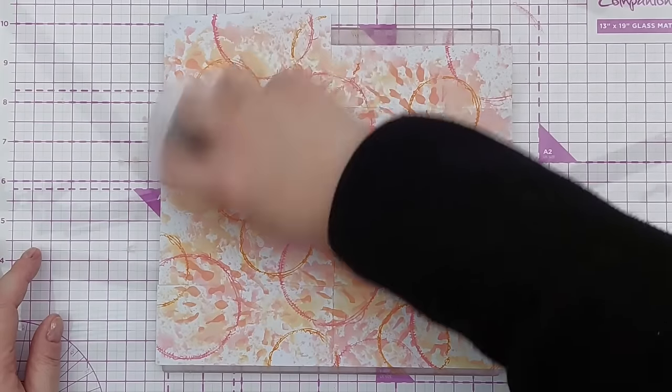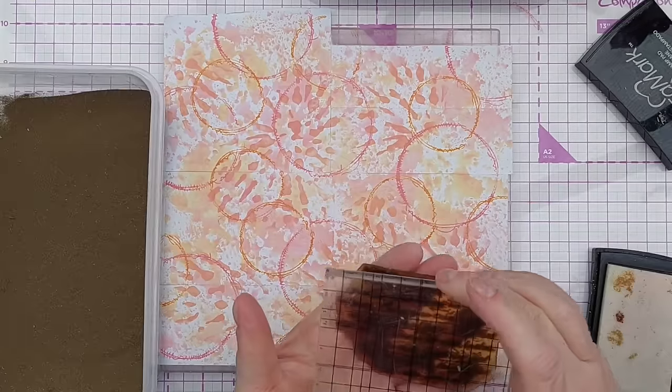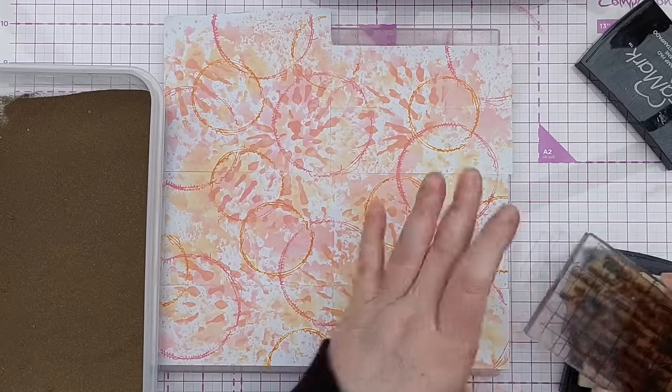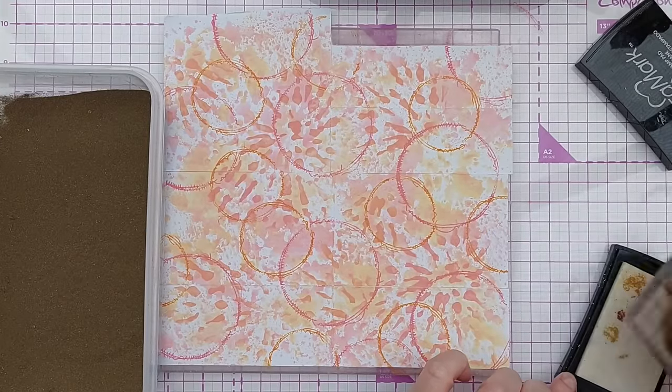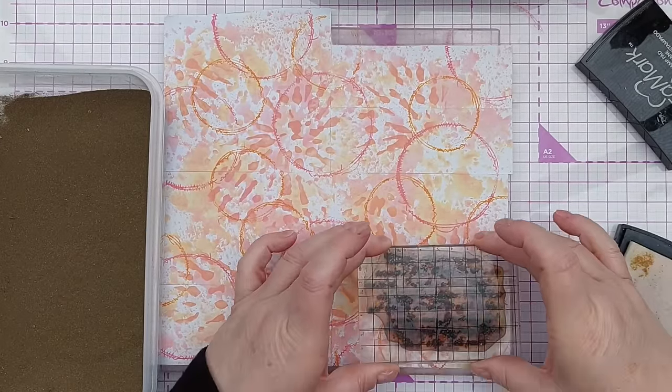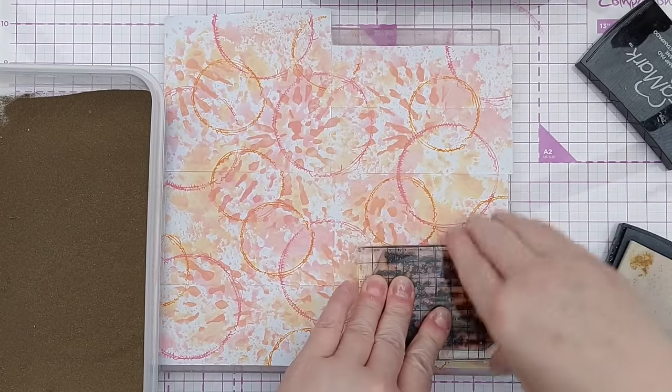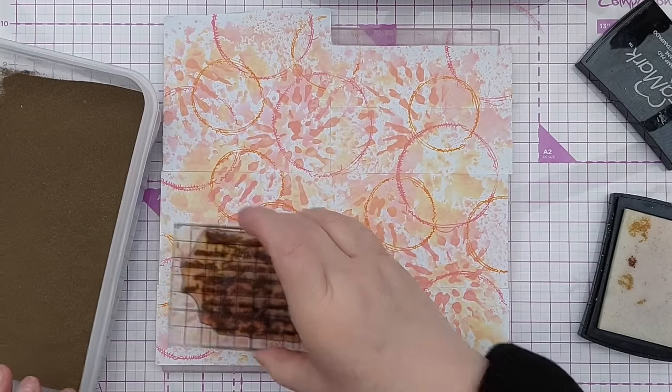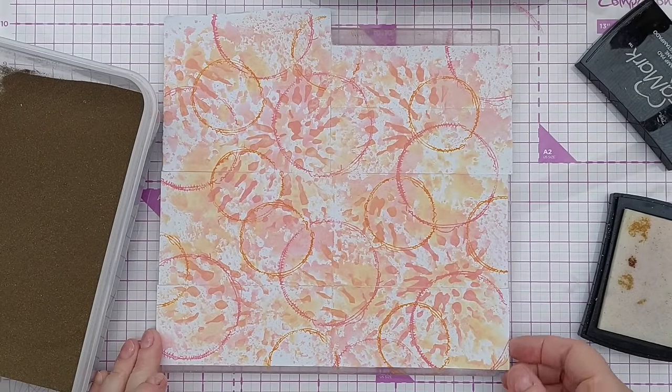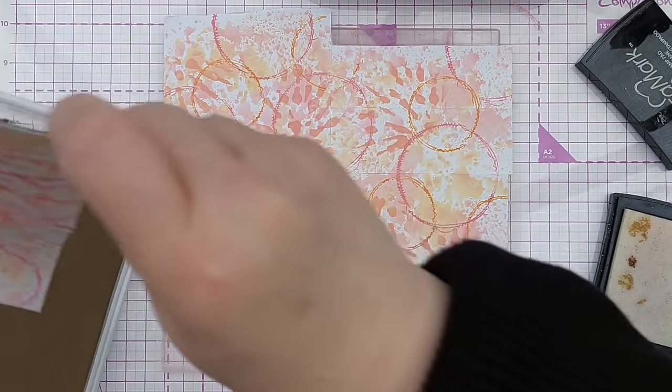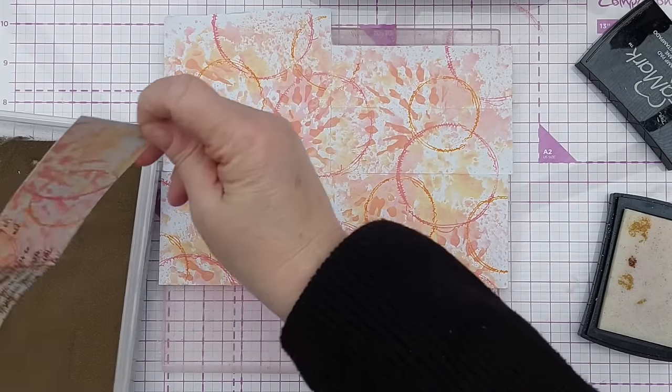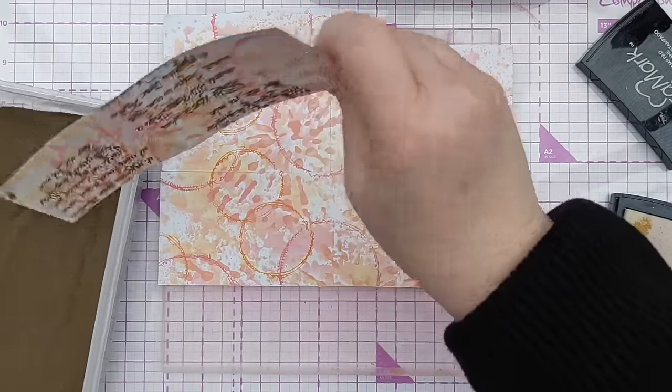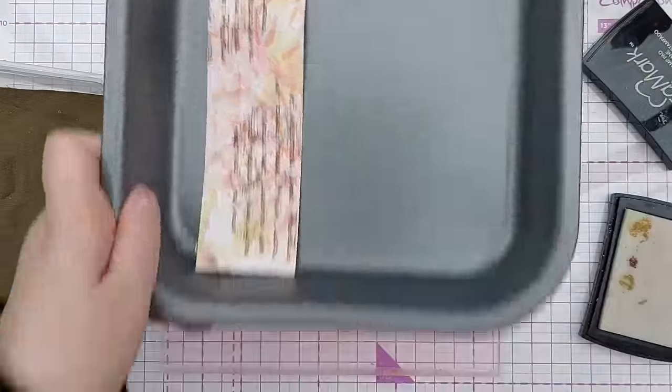So I've got a grungy mixed media text stamp here which I'm going to ink up with embossing ink, and I'm going to stamp that again so it crosses the borders between the scraps. And just so I can kind of keep track of where I've been with the embossing stamp, I'm going to peel the strips off as I do them and pop them in here ready for heating.